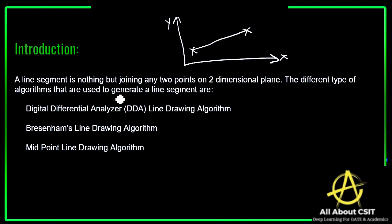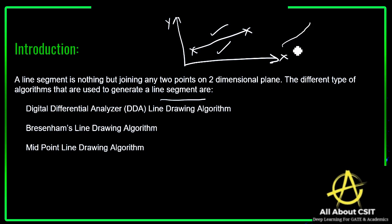There are different types of algorithms used to generate a line segment. You might wonder: for drawing a simple line, why do we need so many algorithms? Because this is a digital environment — a screen consists of thousands of pixels. To join two points across those pixels, we need algorithms to generate the line segment on screen.